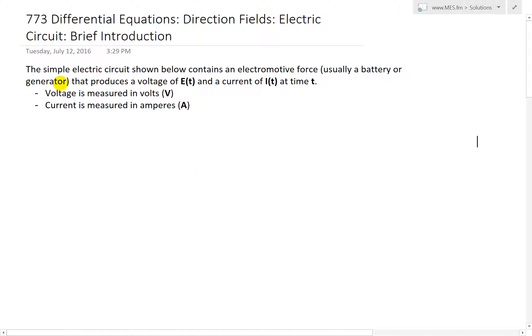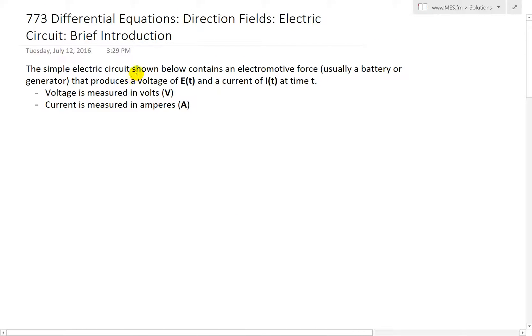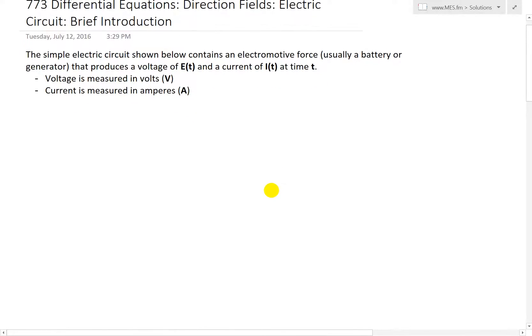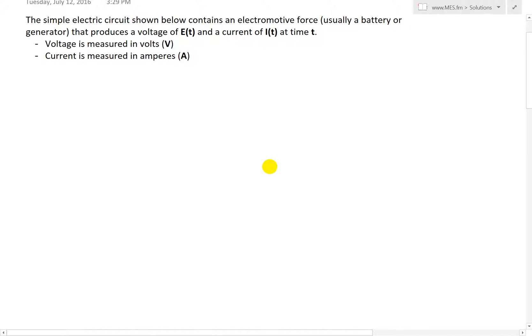Basically, a simple electric circuit contains an electromotive force, usually a battery or a generator, that produces a voltage of E(t), so it's dependent on time, and a current of I(t). Voltage is measured in volts (V), current is measured in amperes (A).